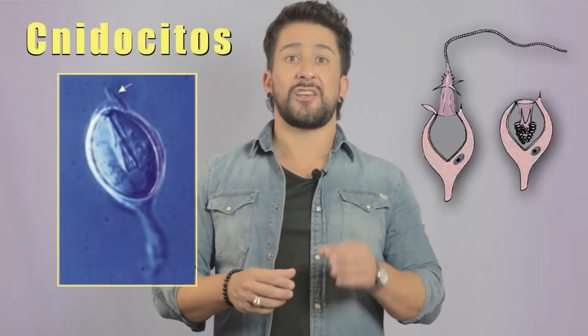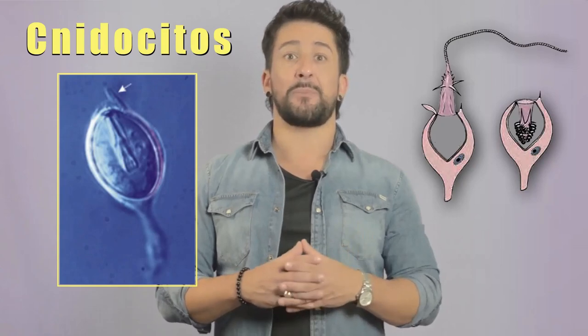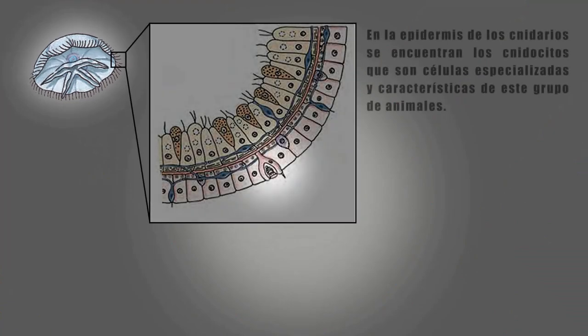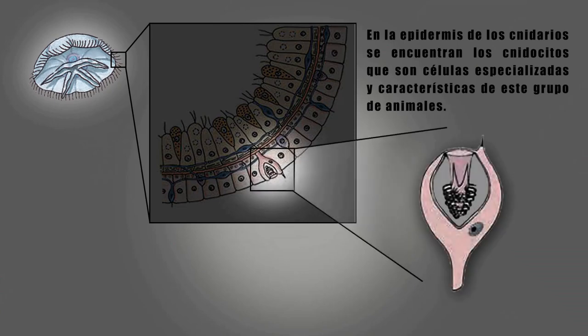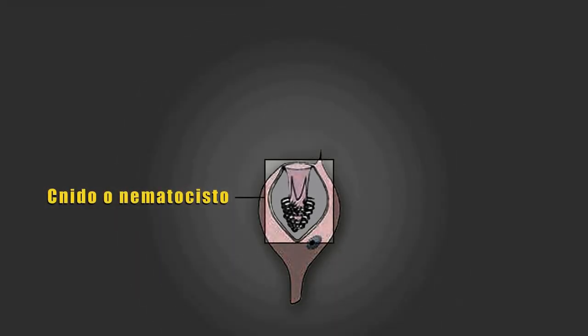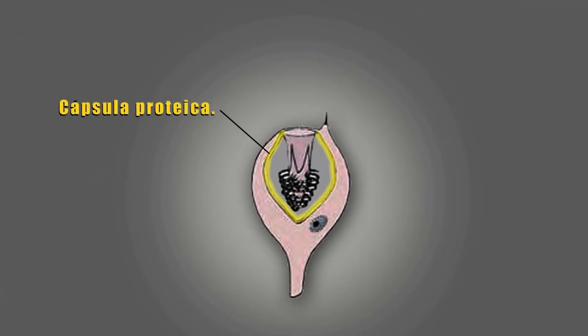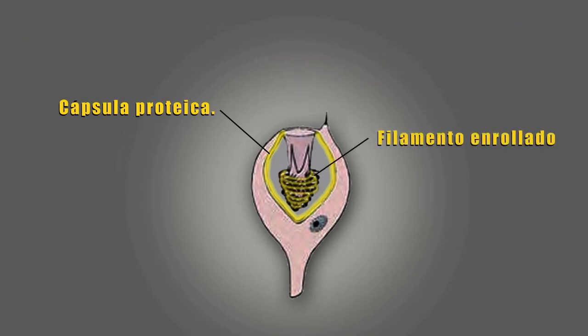Hablemos ahora de los cnidocitos, que son las células típicas de este grupo y permiten atrapar presas y defenderse. ¿Cómo es que una célula puede funcionar como un arma mortal? Dentro de cada cnidocito se encuentra una estructura llamada nido o nematocisto. Esta estructura vendría a ser como una especie de organelo celular. Cada nido está formado por una envoltura o cápsula proteica. En un extremo de esa envoltura se da una invaginación y se forma un largo filamento hueco y enrollado en espiral.